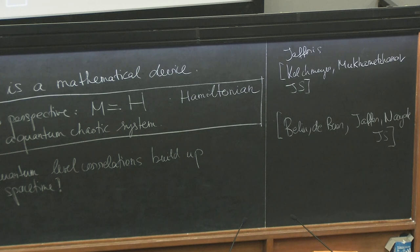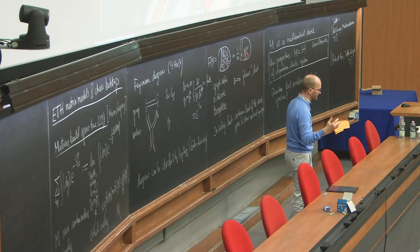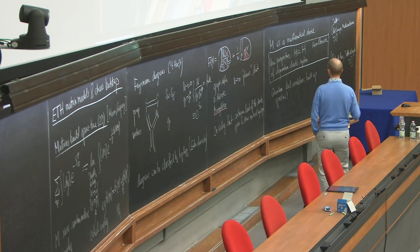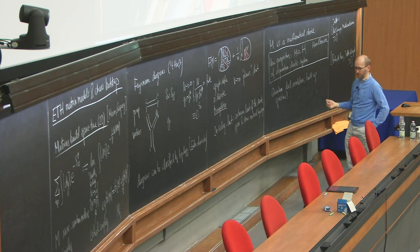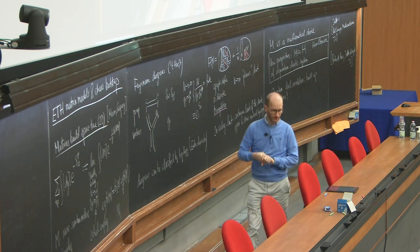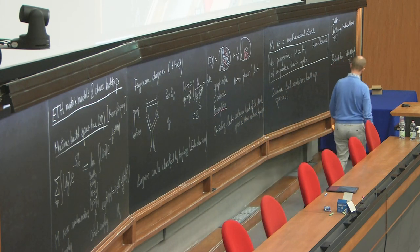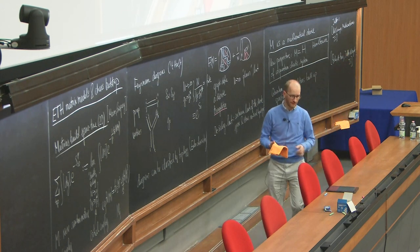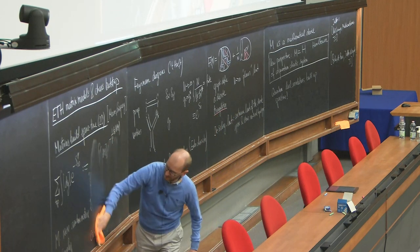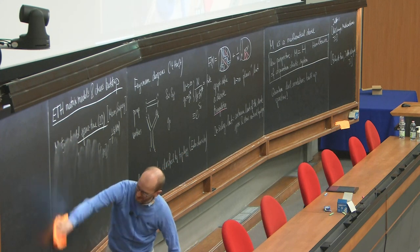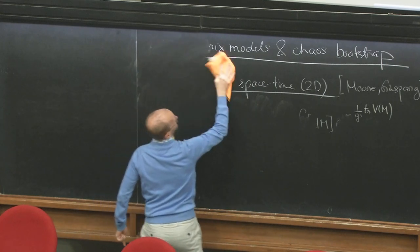I want to get back to the idea of the eigenstate thermalization hypothesis. We're going to use the insights from random matrix theory and quantum chaos in the ETH sense to build matrix models which go beyond these ideas. The obvious joke, of course, is that if you get approached at a party by someone who says 'I have this idea that we live in the matrix,' you can say — yes, we do. Well, if we live in 2D or 3D.